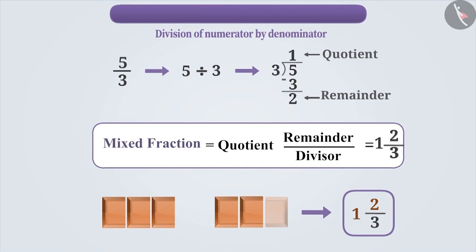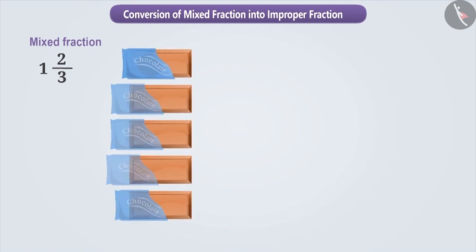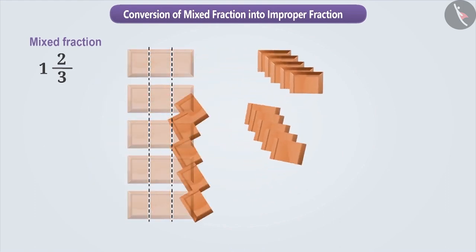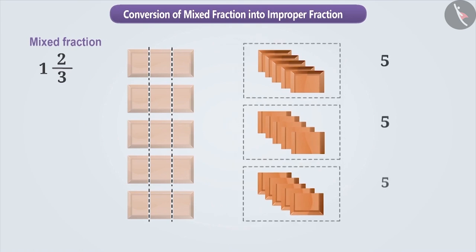Similarly, if we have to convert a mixed fraction 1 and 2 by 3 into an improper fraction, then how will we do it? As you can see, here the denominator is 3. Therefore, we will divide all whole chocolates into 3 equal parts. Here the number in each part is 5 and the denominator is 3. Therefore, the improper fraction is written as 5 by 3.